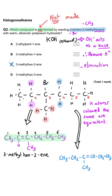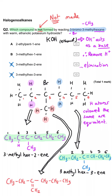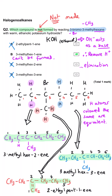Removing a hydrogen from the right-hand side gives 3-methylhex-3-ene. Finally, removing one from the bottom gives a longest chain of five, not six, producing 2-ethylpent-1-ene. So B is the answer — it is the compound not formed.